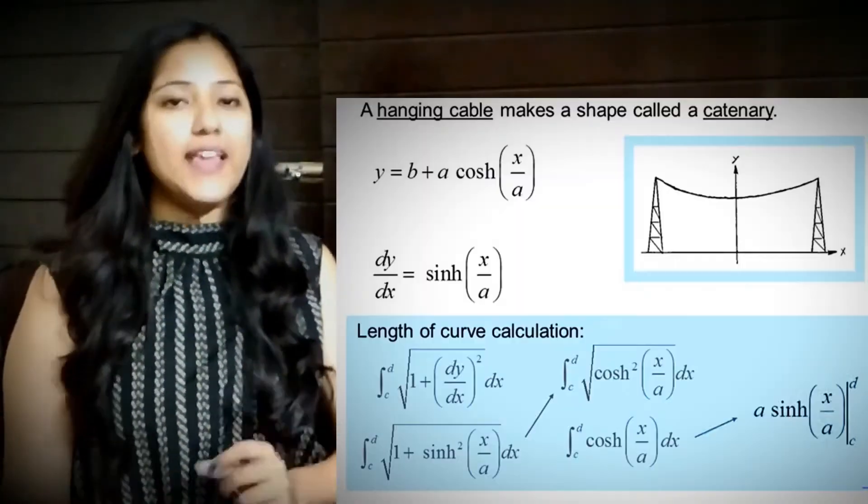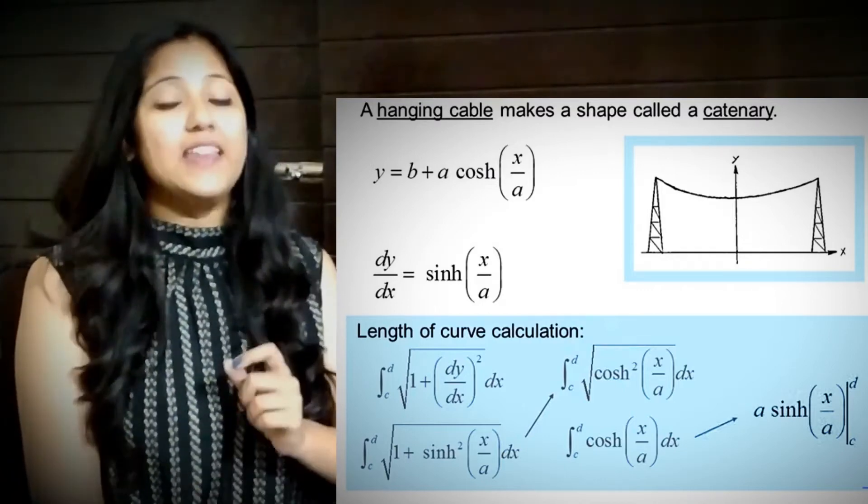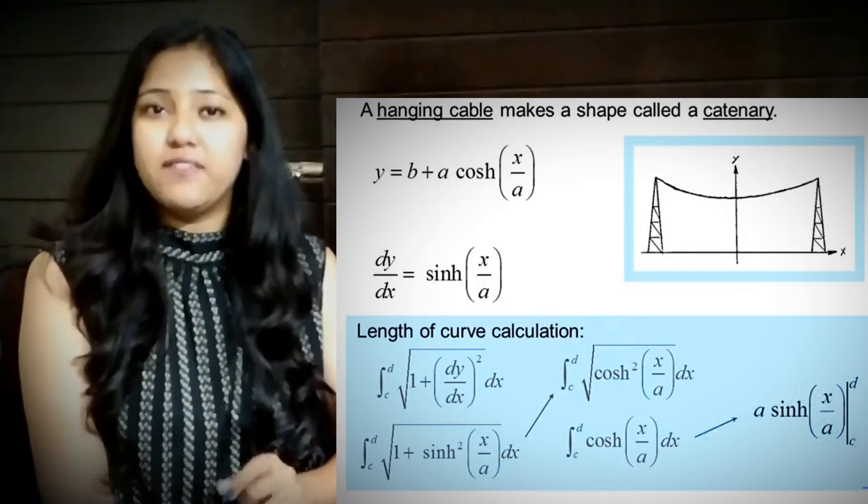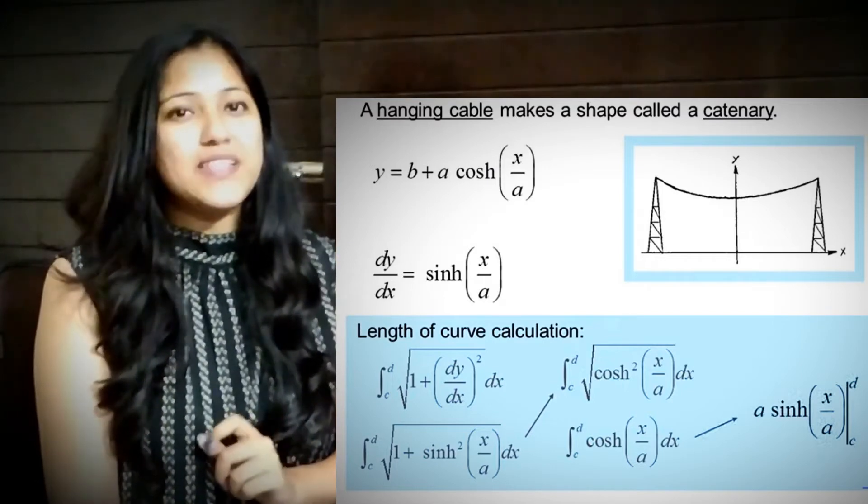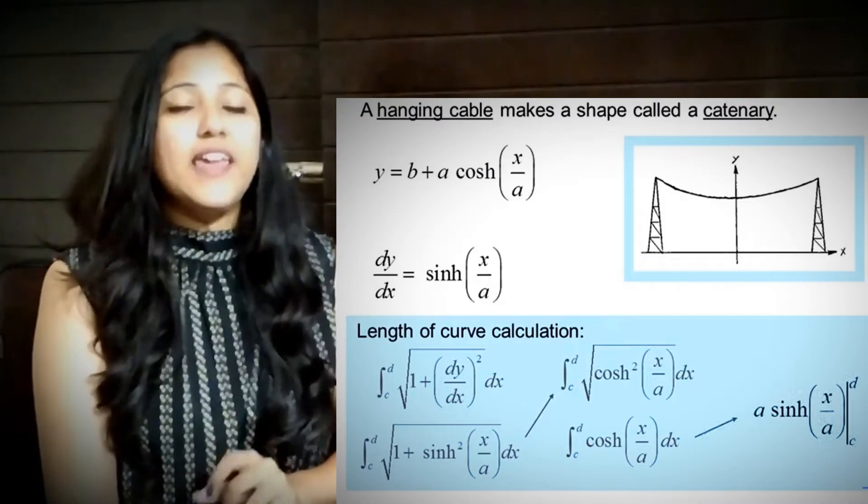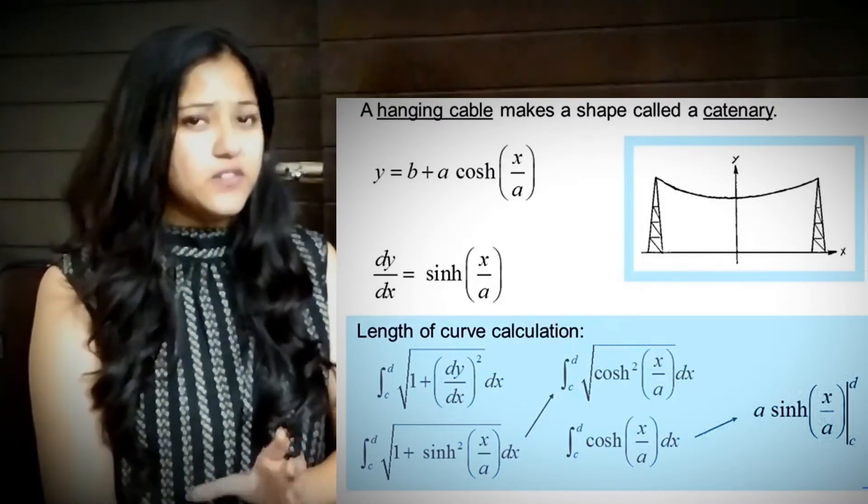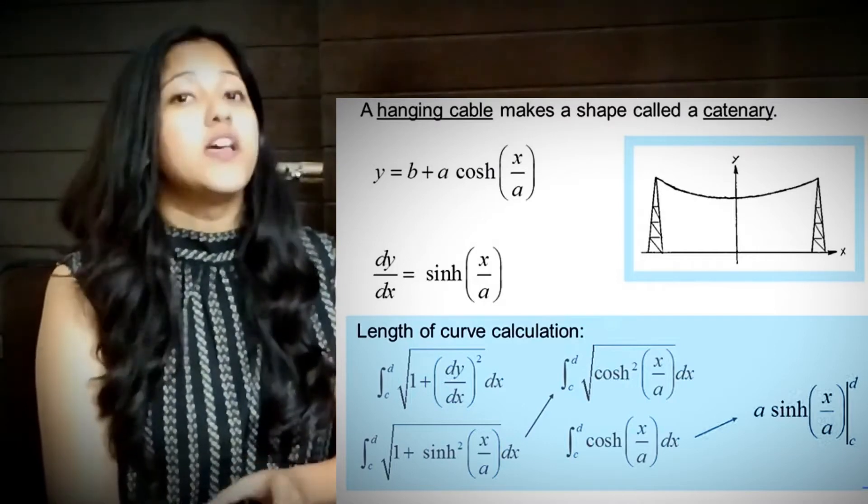The first application is a hanging cable between two towers. The hanging cable forms a particular curve called a catenary, and the equation of that catenary is given by y = b + a cosh(x/a), where a and b are arbitrary constants. So if we know the distance between the two towers, we can also find the length of the cable.